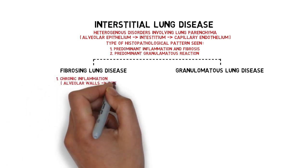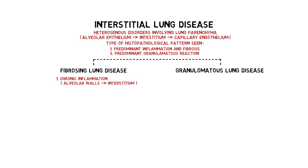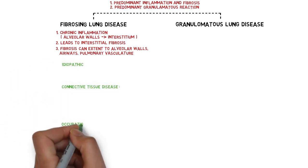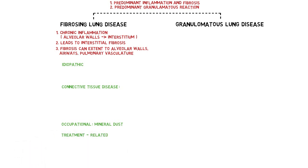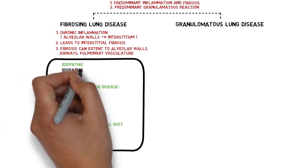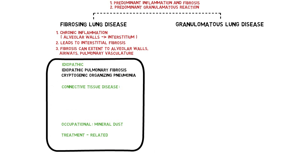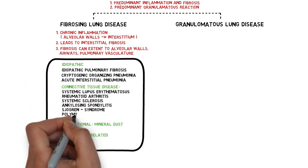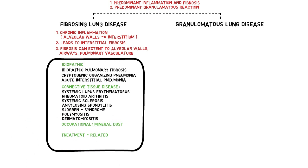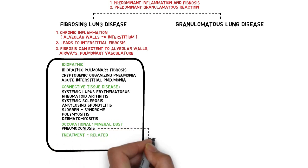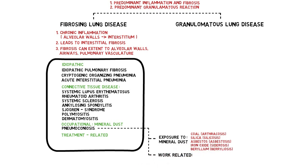Fibrosing lung disease occurs when chronic inflammation of the alveolar wall extends to the interstitium, leading to interstitial fibrosis. In severe cases, fibrosis extends to the airways and pulmonary vasculature. Causes include idiopathic (most commonly idiopathic pulmonary fibrosis, cryptogenic organizing pneumonia, acute interstitial pneumonia), connective tissue disease, occupational lung disease (pneumoconiosis from mineral dust — coal workers' pneumoconiosis/anthracosis, silicosis from silica, asbestosis from asbestos), and fibrosis associated with treatment. Work-related exposures include mining, welding, and industrial manufacturing.